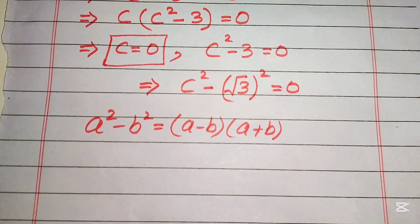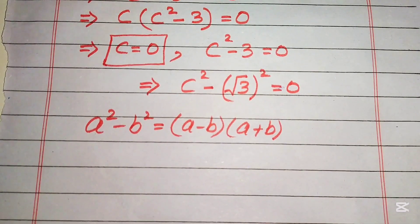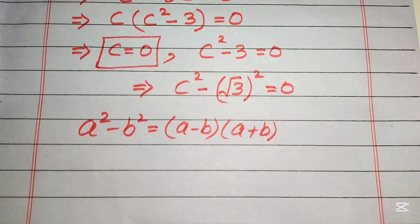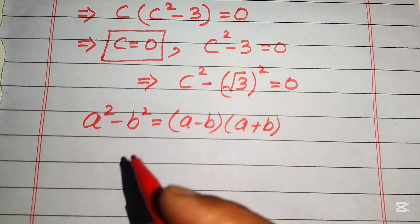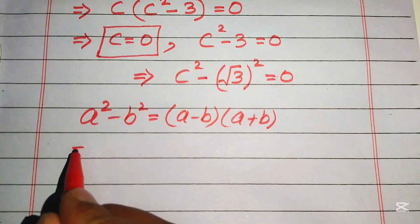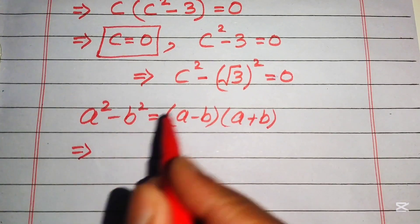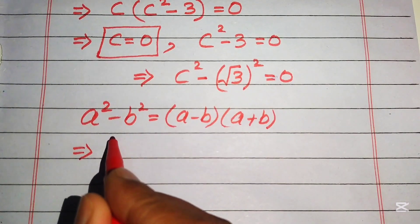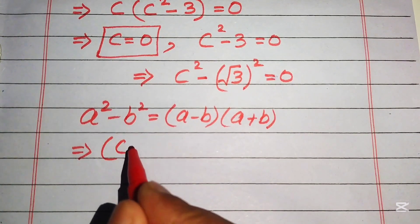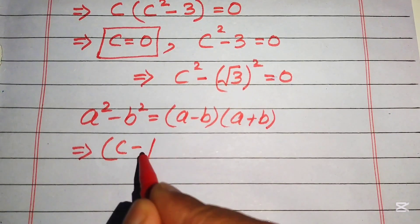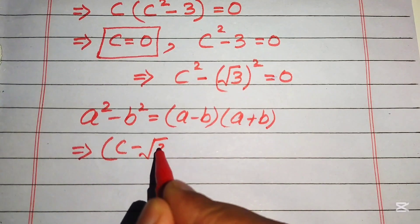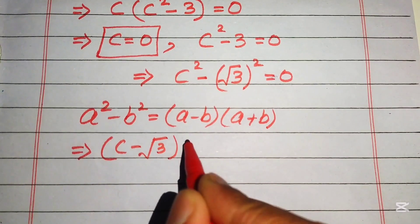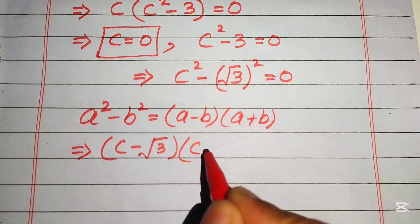Applying this formula, the equation becomes c minus square root of three, times c plus square root of three, equals zero.